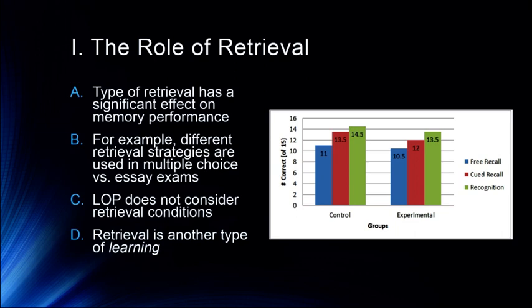We also want to add that retrieval is another type of learning. Retrieval is, in fact, its own type of encoding. When we talk about the neurobiology of memory in the next lecture, you'll see that when we retrieve a memory, it actually gets re-encoded. We'll watch a movie called Memory Hackers as part of this process — it's from PBS, a Nova special. I highly recommend it — it's really great.